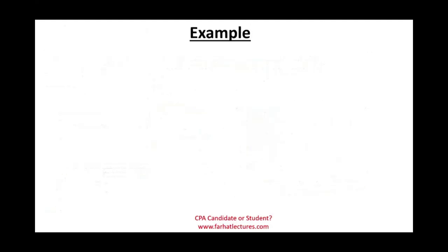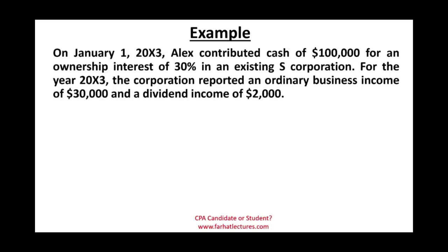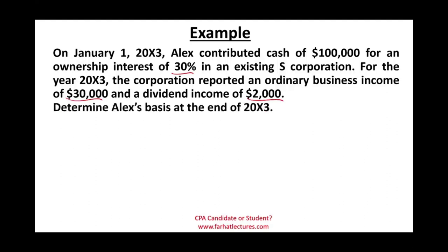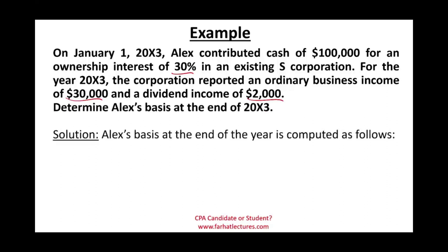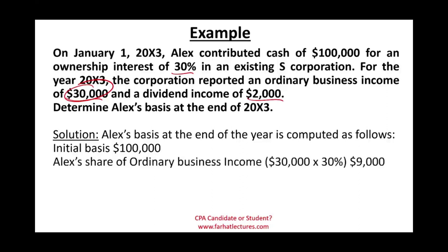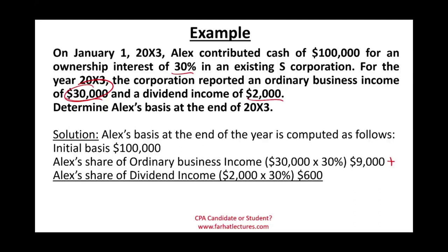Quick example: On January 1st, Alex contributed $100,000 for a 30% ownership interest in an existing S corporation. The corporation reported ordinary business income of $30,000 and a dividend of $2,000. Alex's basis starts at $100,000. His 30% share of the $30,000 income is $9,000, increasing his basis. His 30% share of the $2,000 dividend is $600, also included. Alex's ending basis is $109,600.